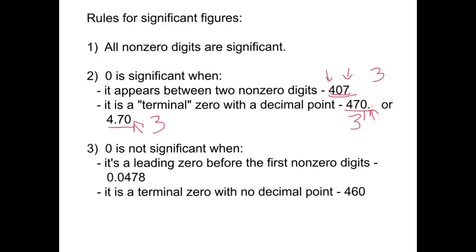A zero is not significant if it is a leading zero before the first non-zero digit. In 0.0478, the two zeros before the first non-zero digit are not significant — they are essentially placeholders. Without that leading zero we would have 0.478, which is not the same number, so it is needed but not significant. This number has three significant digits. Similarly, a terminal zero with no decimal point, such as 460, is not significant — so that number also has only two significant digits.